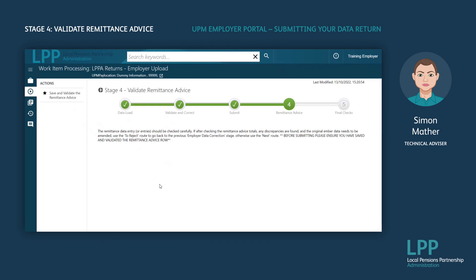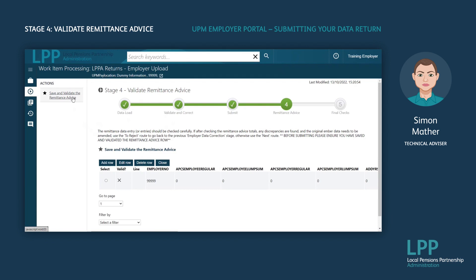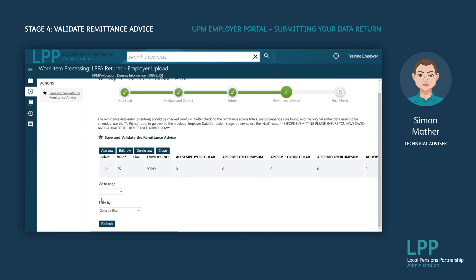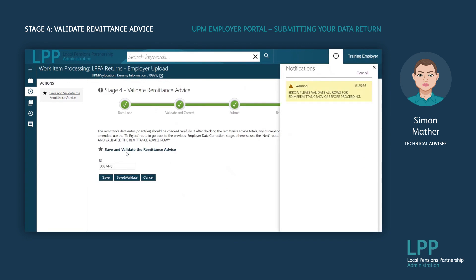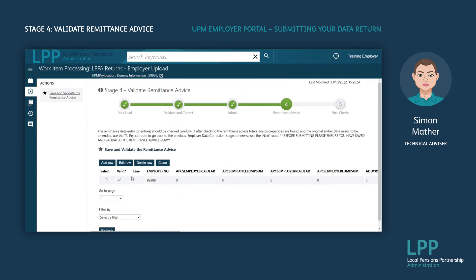You should now be at Stage 4 of the process. This is where you will be asked to save and validate the remittance advice. In the actions column click on this, then scroll across to check that the total contributions etc. tally with what you are expecting. If you are happy, enter a dot in the Select column, then select Edit Row, then choose Save and Validate. If you are uploading a data return for more than one employer — for example if you are a payroll provider or an academy with multiple schools — you will need to save and validate the remittance advice for each employer listed on the screen. In this example I only have one, as I am only uploading the data return for one employer. Once you have saved and validated for each employer listed, click Close.